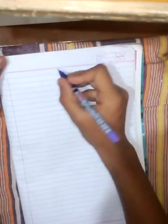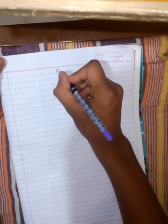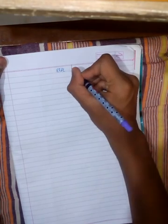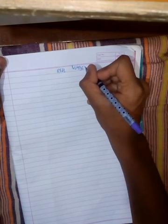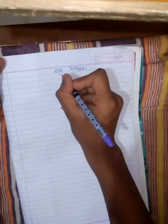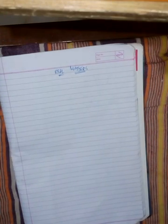Hello, today we're going to start chapter number one called Real Numbers. So the chapter Real Numbers begins with the introduction of Euclid's division lemma or you can say algorithm.